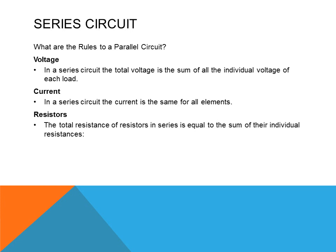So the rules of series circuits: Voltage — in a series circuit, the total voltage is the sum of all the individual voltages of each load. We measure the voltage drop at each load, or each light bulb, or each resistor, and add them up — that would be the total voltage. Current in a series circuit works this way: the current is the same for all the loads. No matter where you check the current draw, it will be the same throughout the whole system.